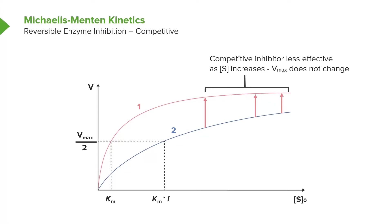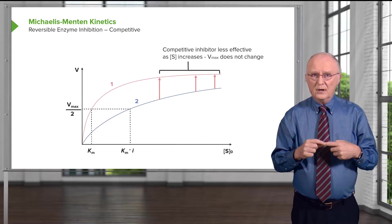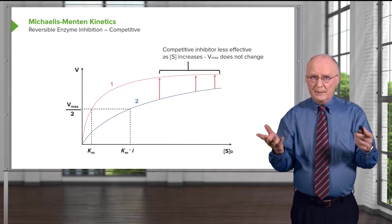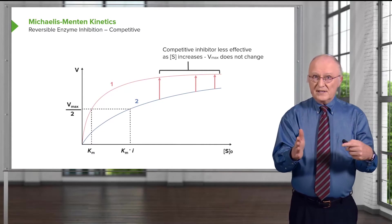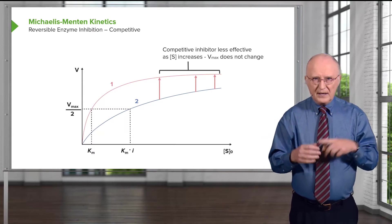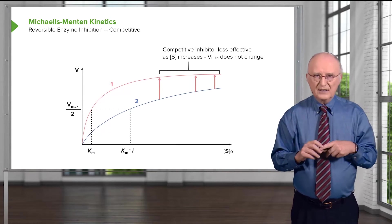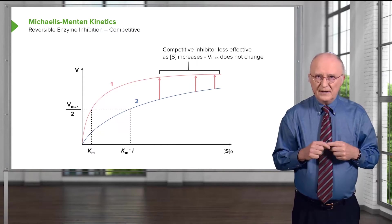In addition to VMAX not changing for the competitively inhibited reaction, something does change: the KM. Since both reactions — uninhibited and inhibited — have the same VMAX, they have the same VMAX over 2. So if we plot the KM value from VMAX over 2 on each curve, we discover that the KM for the uninhibited reaction is as expected, but the KM for the competitively inhibited reaction increases. That increase indicates an apparent change in the affinity of the enzyme for the substrate — I say apparent because it doesn't actually change the affinity, but the apparent KM increases, making it seem the enzyme is losing affinity for its substrate.